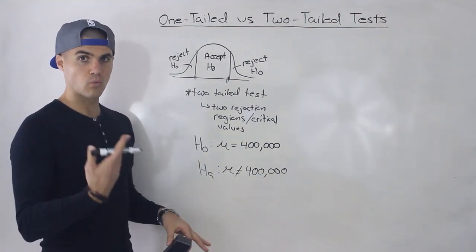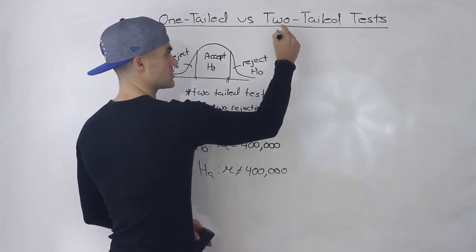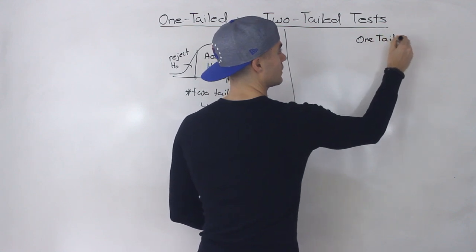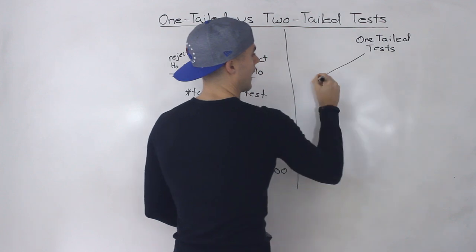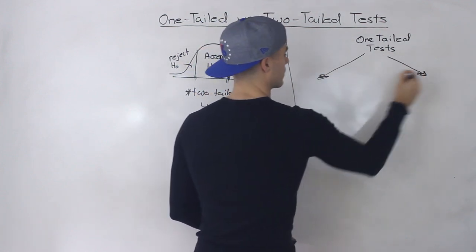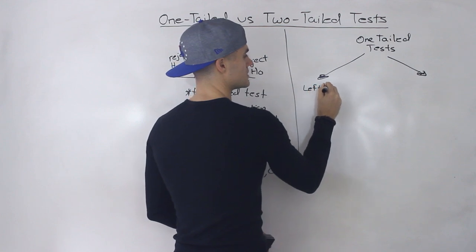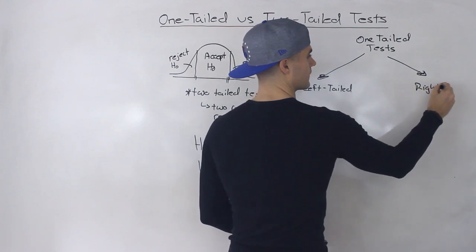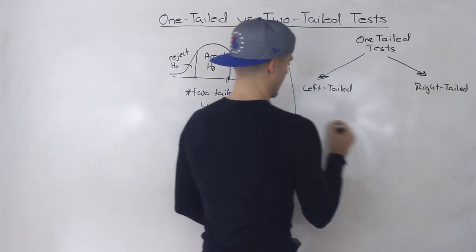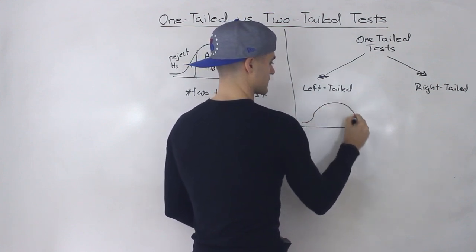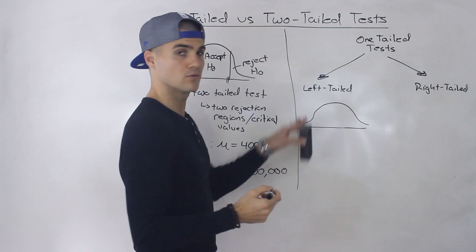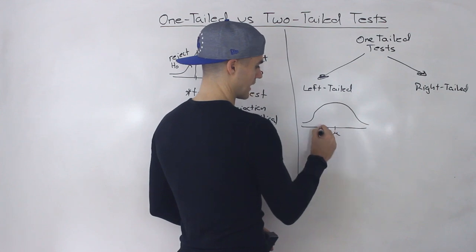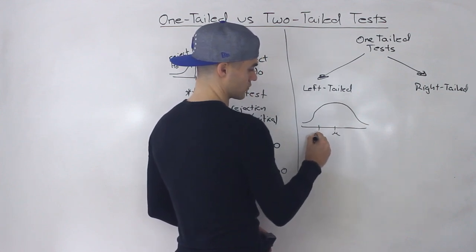However, you can also have one-tailed tests, and there are actually two kinds of one-tailed tests: left-tailed and right-tailed. We're going to do more specific examples in this video, but to give a brief overview — a left-tailed test means there's only one critical value. Here's the mean in the middle, and the critical value is going to be to the left of the mean.